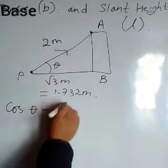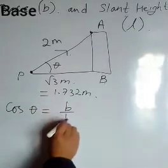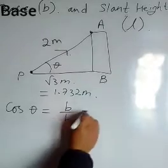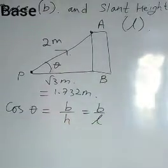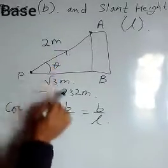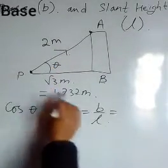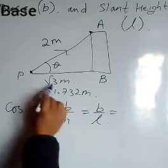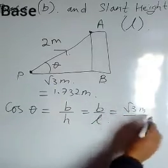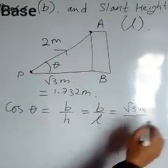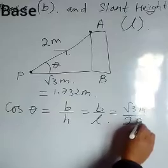Cos theta gives B by H, hypotenuse. So H is what? Base is the slant height L. So suppose these conditions are given. Now base is given root 3 meters, and the slant height is 2 meters.